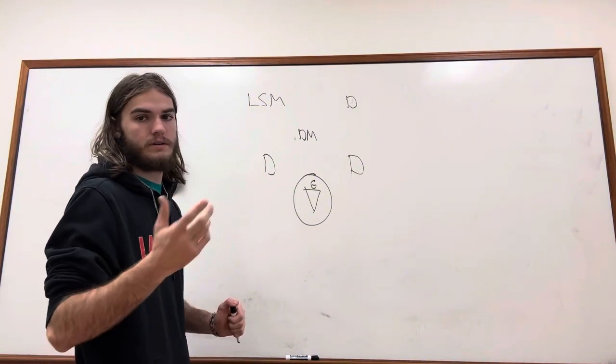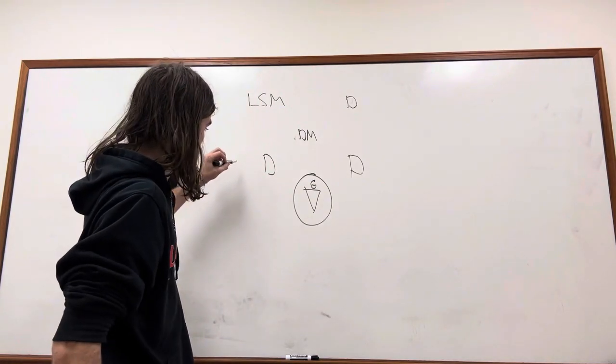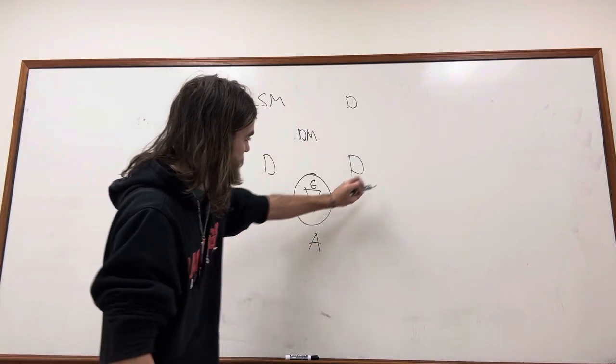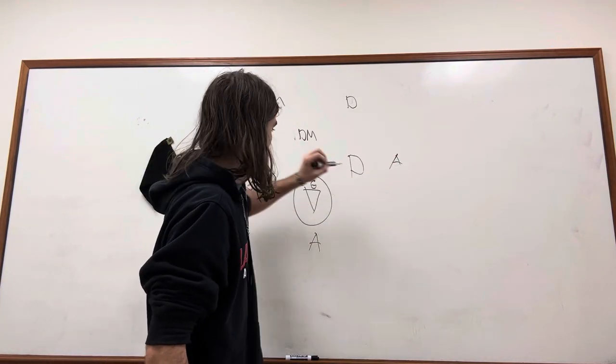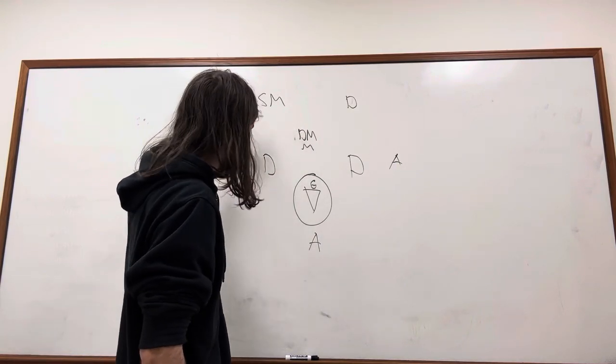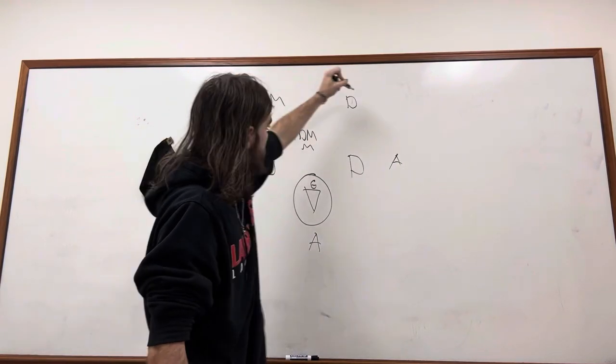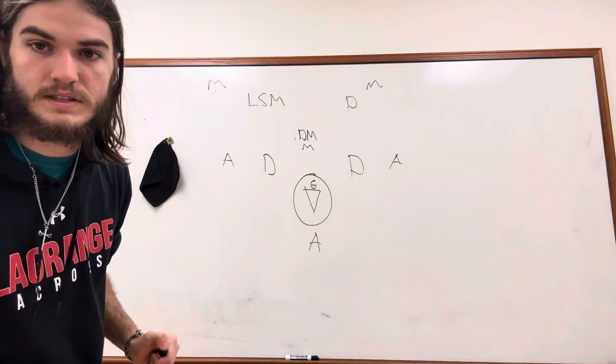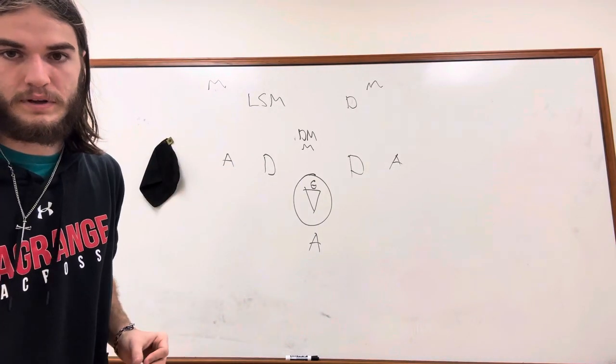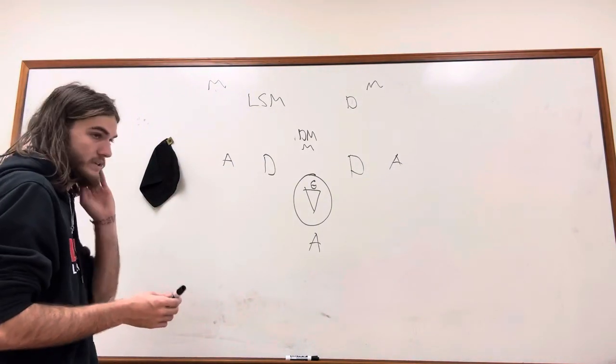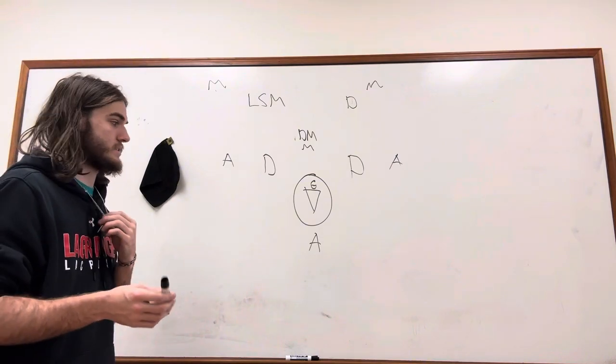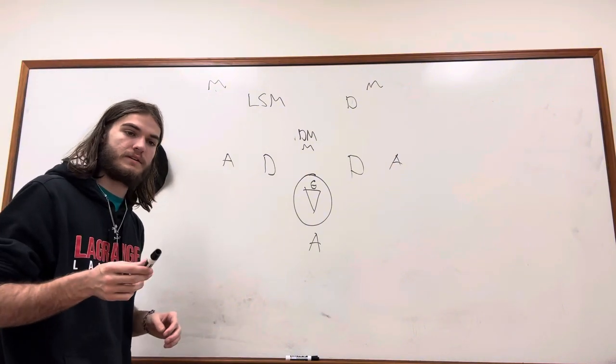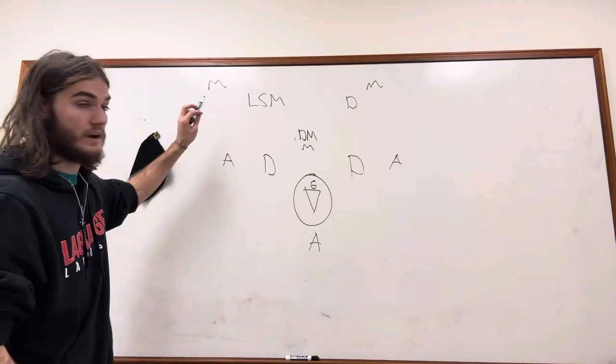And what we're going to look at first is when the offense has an attackman here, attackman at X, attackman right here, a midi down low, a midi up top, and a midi up top. So that's the type of offense that I'm not sure if you can see it well or not, but that's the basic offense that they run against this type of stuff.